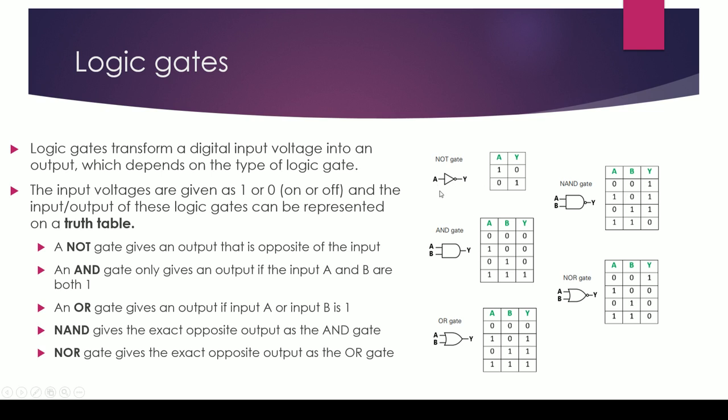For a NOT gate, you can see that if you have a signal of 1 at A, the input, then the Y output will always be 0, and vice versa. If you get 0 as the input, you'll get 1 as the output, because it always reverses or the output is always the opposite of the input. Pretty simple.